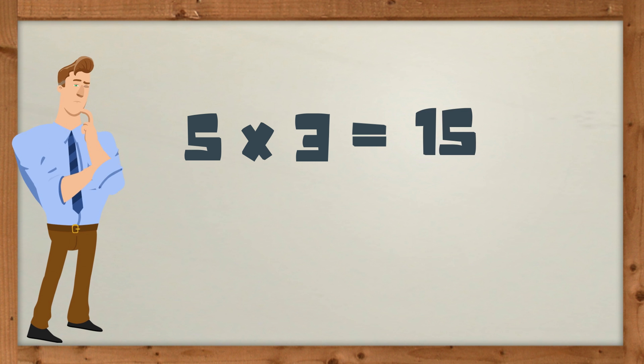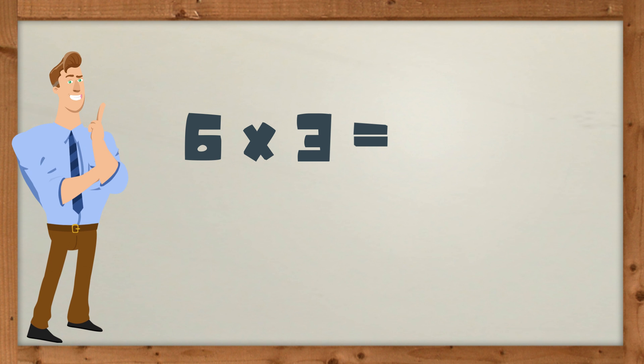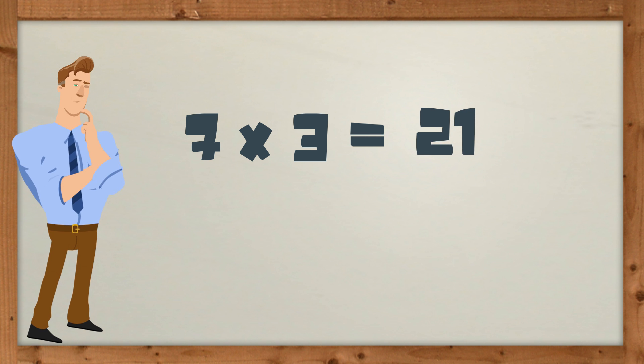5 times 3 equals 15. 6 times 3 equals 18. 7 times 3 equals 21.